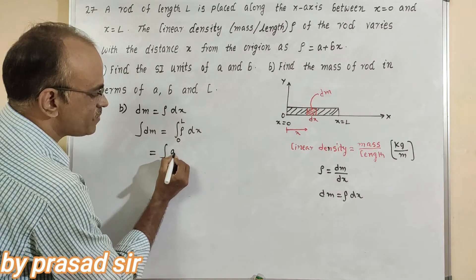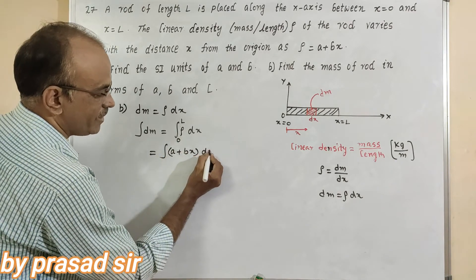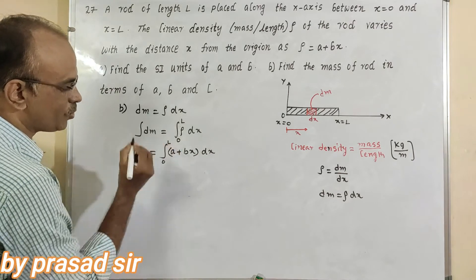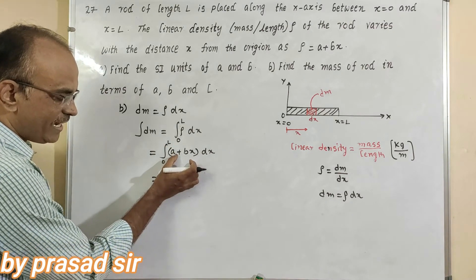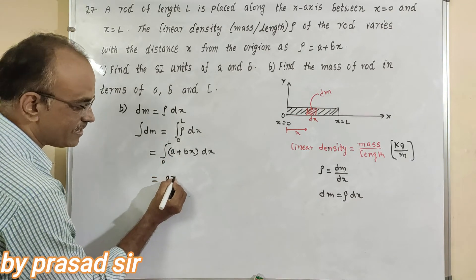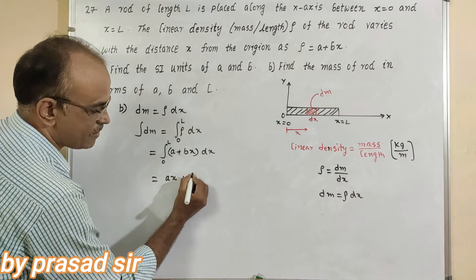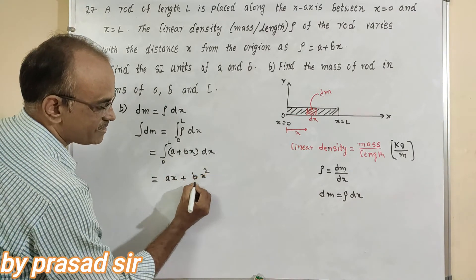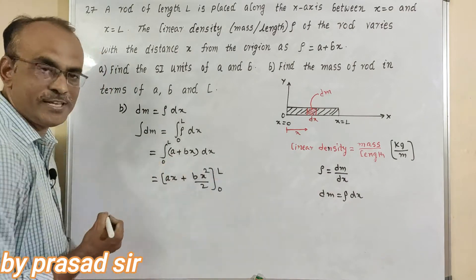Now here rho means which one, A plus Bx into dx, 0 to L. Now here apply integration for this one. Integration of A, that we will take as Ax. Bx integration, that is Bx square by 2, applying the limits 0 to L.